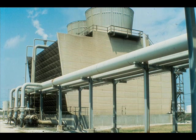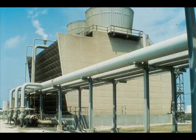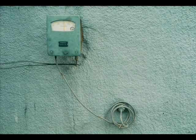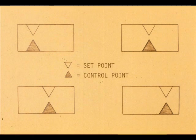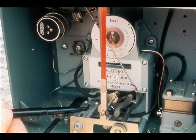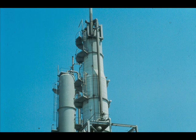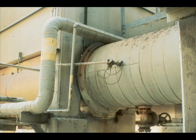Proportional control is satisfactory for applications where the control point does not have to be maintained at a precise position — an example is a cooling tower sump level or a storage tank temperature. If the control point must be maintained at a precise position, the application calls for a proportional plus reset controller. Examples are a fractionator tower top temperature or the coil outlet temperature of a furnace. Now work exercise two in your workbook.